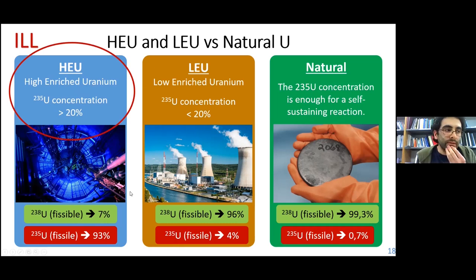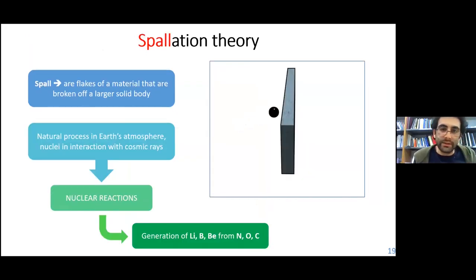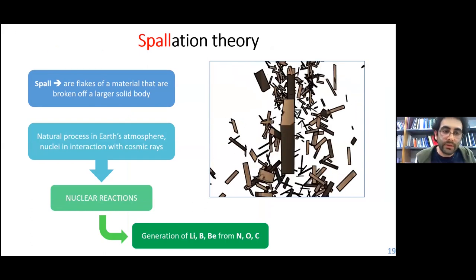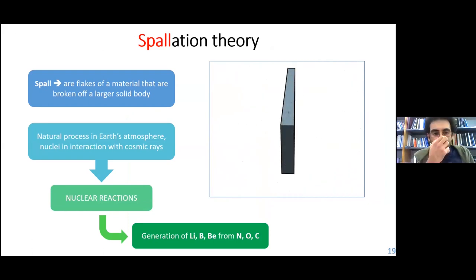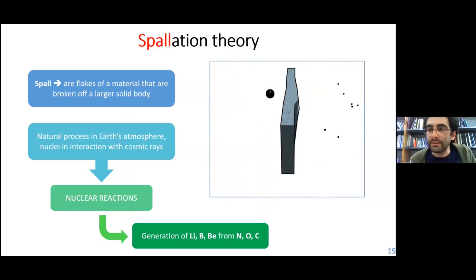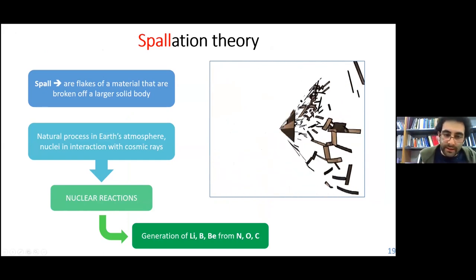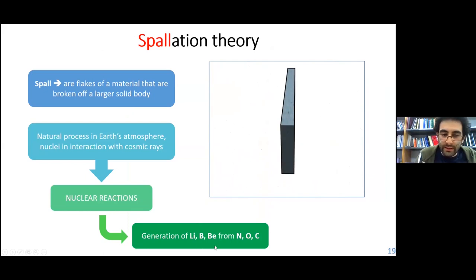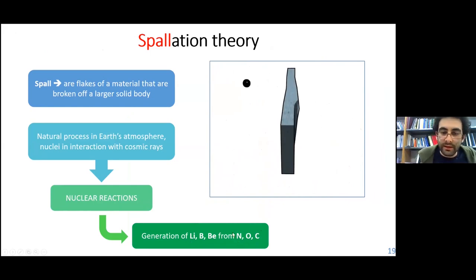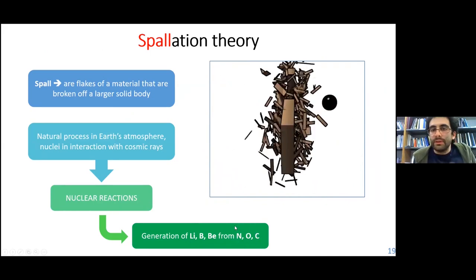Now let's talk about another technique possible to use to make neutrons: spallation. Spallation — 'spall' means flakes of material broken off a large solid body. Actually, spallation is a natural process, for example with cosmic rays and nuclei in the atmosphere. It seems these three atoms are from spallation reactions from those other three atoms — so it is a natural process.